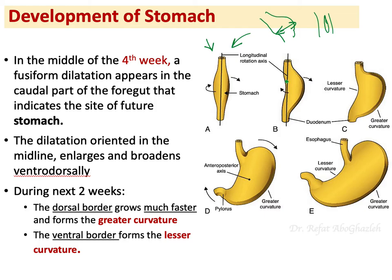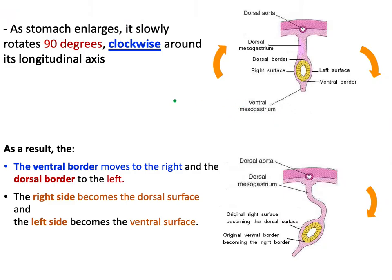During the next two weeks, the dorsal border grows much faster than the ventral border. Looking at the stomach laterally, the dorsal border grows faster, creating the greater curvature, while the ventral border forms the lesser curvature. As the stomach enlarges, unequal growth of different parts of the stomach wall and development of surrounding organs creates factors that cause the stomach to rotate.